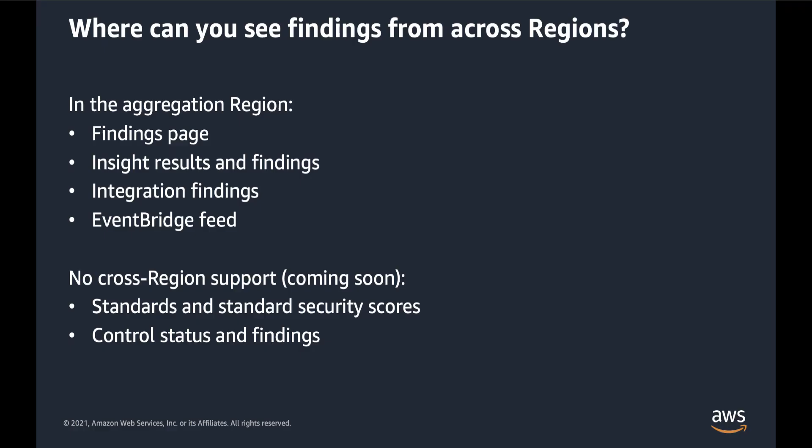After you enable finding aggregation in the aggregation region, the following pages display findings from across regions: findings, insight results in findings, and finding lists for integrations. The EventBridge feed also includes findings from all of the linked regions. All standard and control pages, including the control status and standard security score, are specific to the current region.